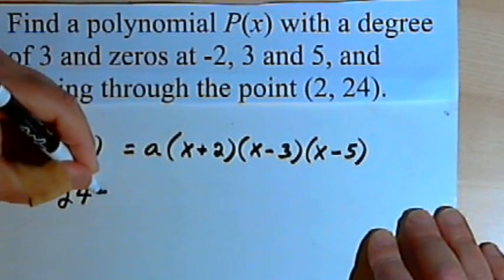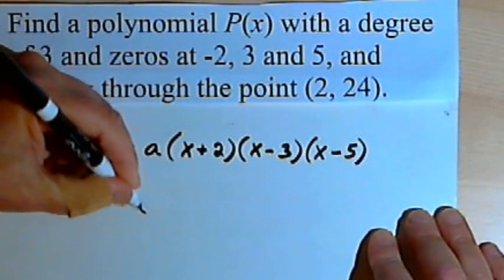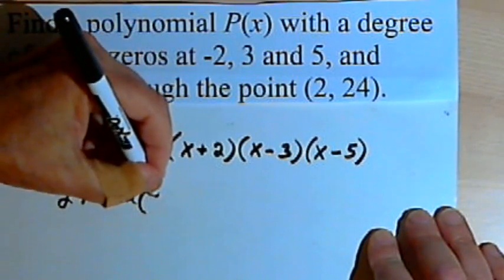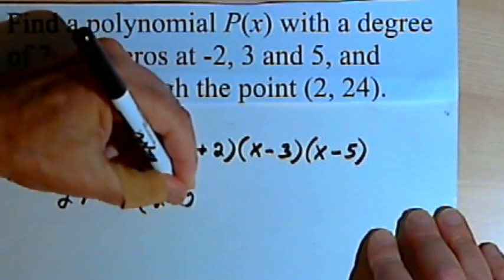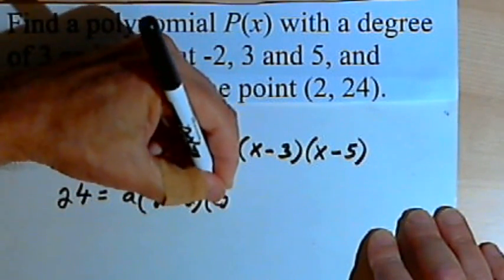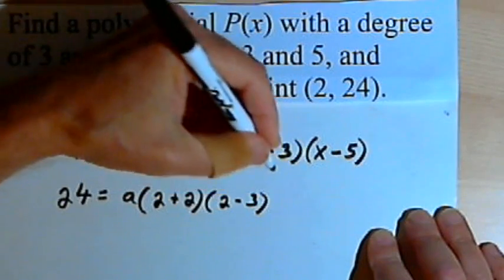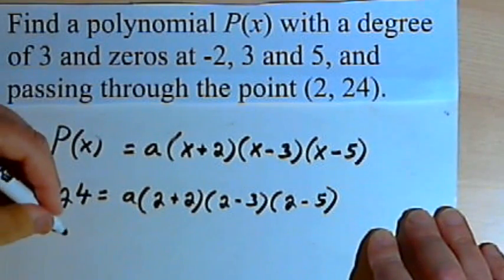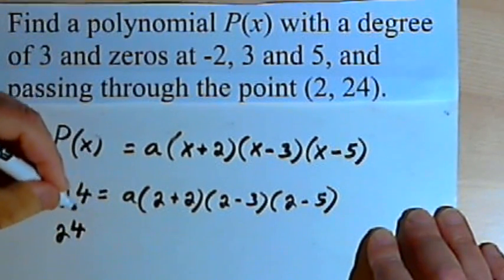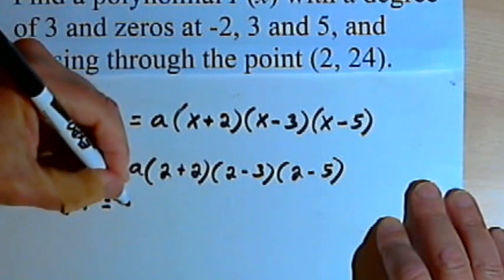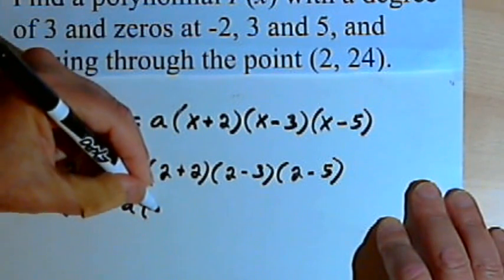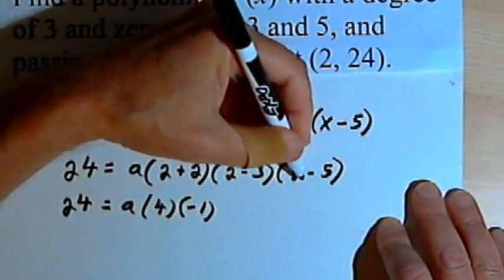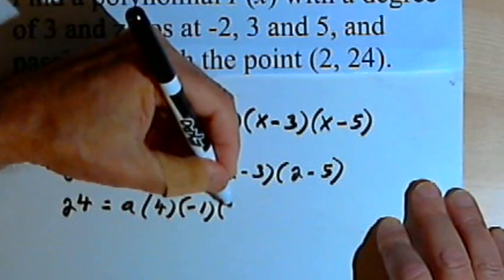So I'll have 24 equals a times... and then instead of these x's, I'm going to write the 2. So it's going to be a times (2 plus 2) times (2 minus 3) times (2 minus 5). Now let's find out what a equals. So this will become 24 equals a times... 2 plus 2 is 4. 2 minus 3 is negative 1, and 2 minus 5 is negative 3.